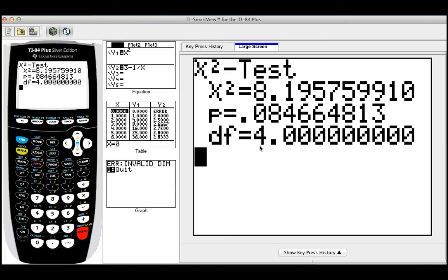Moreover, we also get the degrees of freedom. Remember, the formula is row minus one times columns minus one. But the calculator gives you everything.